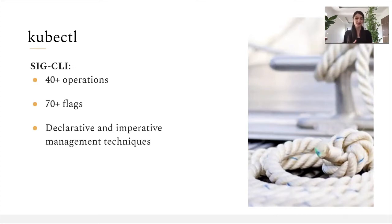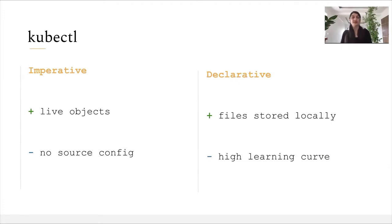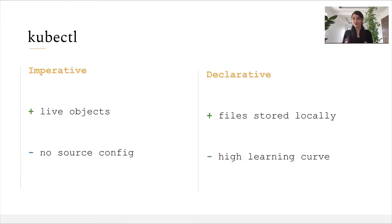With kubectl, we have support for both declarative and imperative management techniques. The imperative technique means that we're going to operate on the live object straightaway — an engineer will either create or delete the resource, and this will be immediately visible within the cluster. The good thing about this approach is that it can have a very quick upscale for developers; they'll be able to deploy their application to the cluster immediately. However, on the downside, it has no source for the configuration, so if you'd like to share this configuration with other teams or a wider organization, it's going to be difficult.